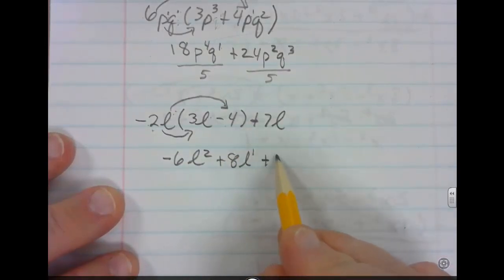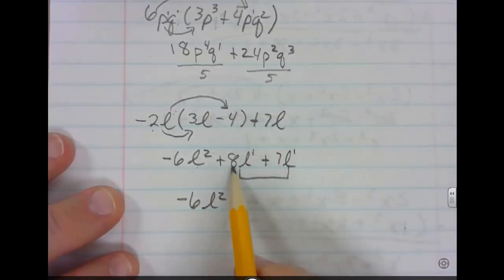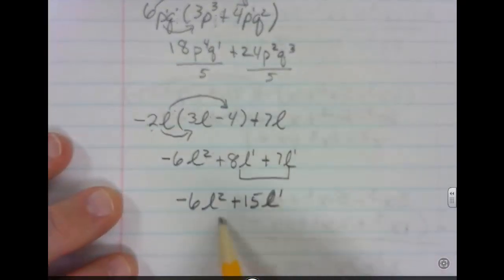Then bring down the plus 7L. Now this L is to the first and this L is to the first, which makes these like terms. You cannot combine these with this one because it has a square on it. So negative 6L to the second and then 8 plus 7 is going to give you plus 15L to the first. That's your final answer.